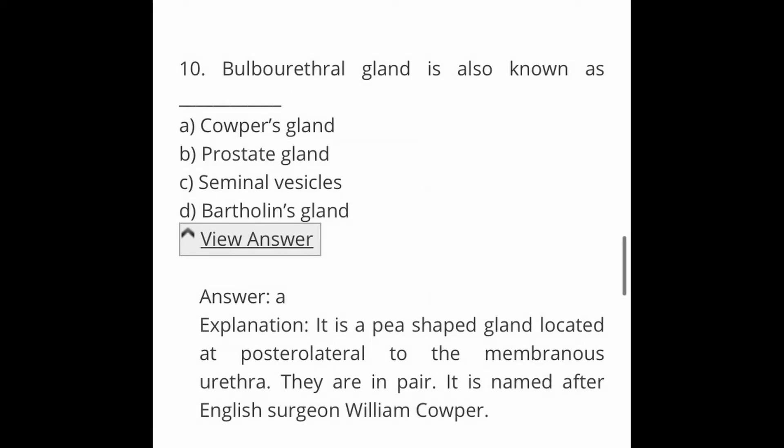Next question: the bulbourethral gland is also known as? Options are A. Cowper's gland, B. Prostate gland, C. Seminal vesicle, and D. Bartholin gland. The answer is A, Cowper's gland. It is a pea-shaped gland located posterolateral to the membranous urethra. They are in pairs. It is named after the English surgeon William Cowper.